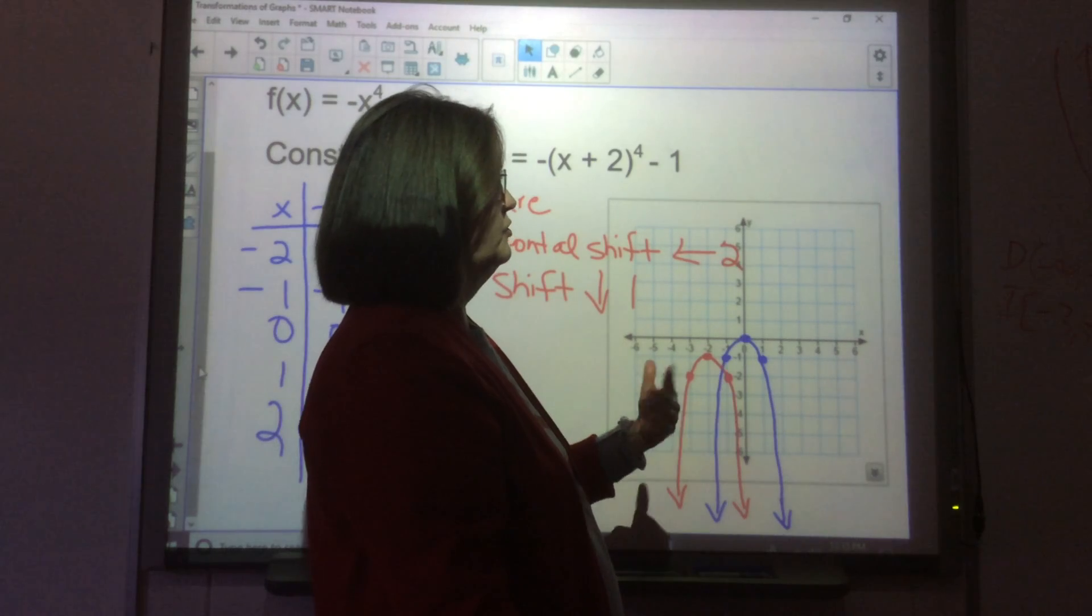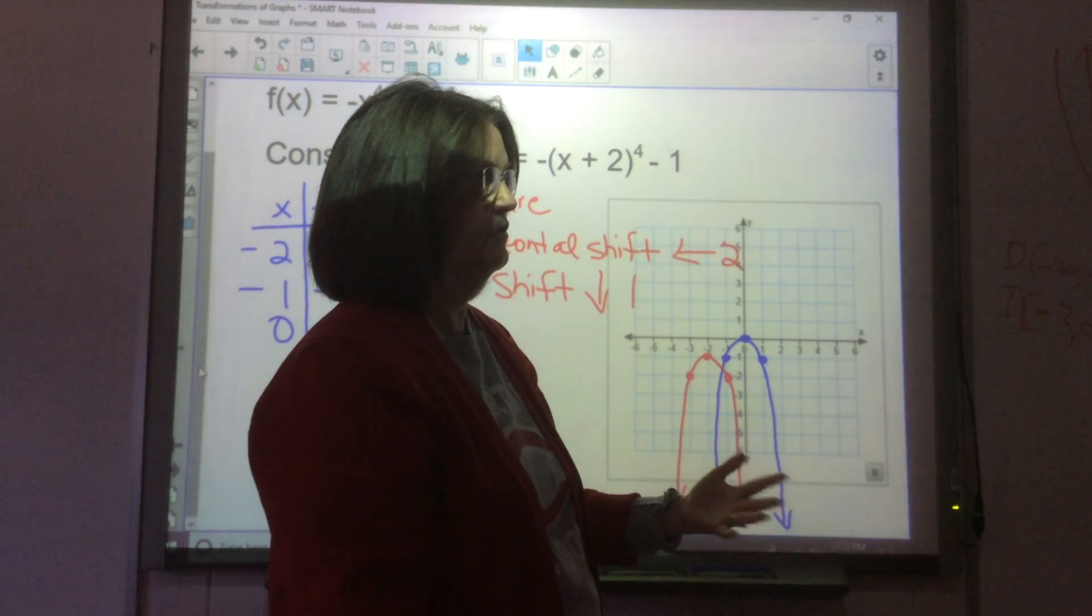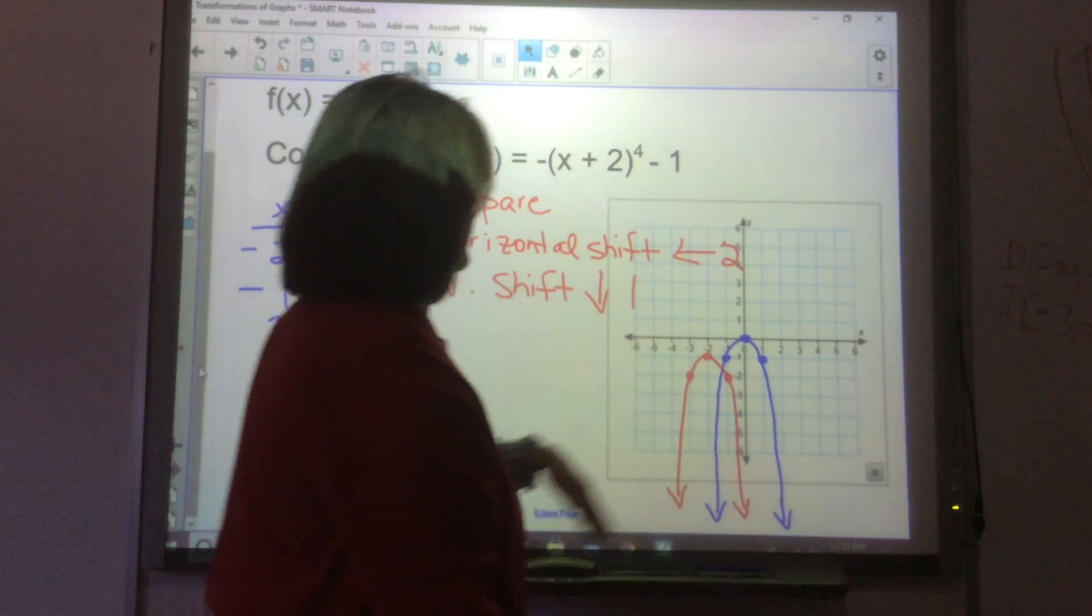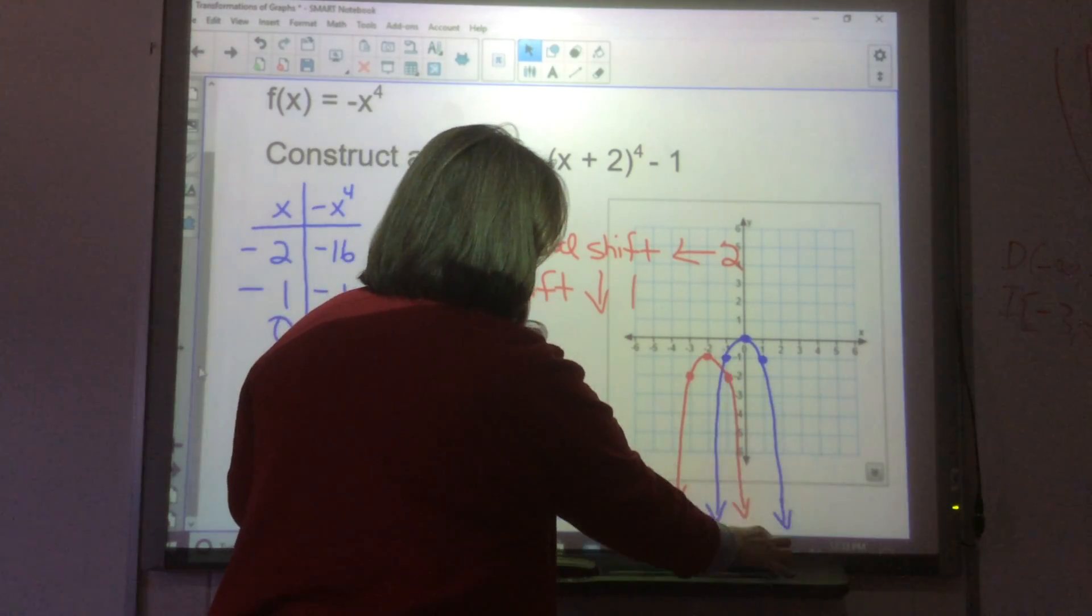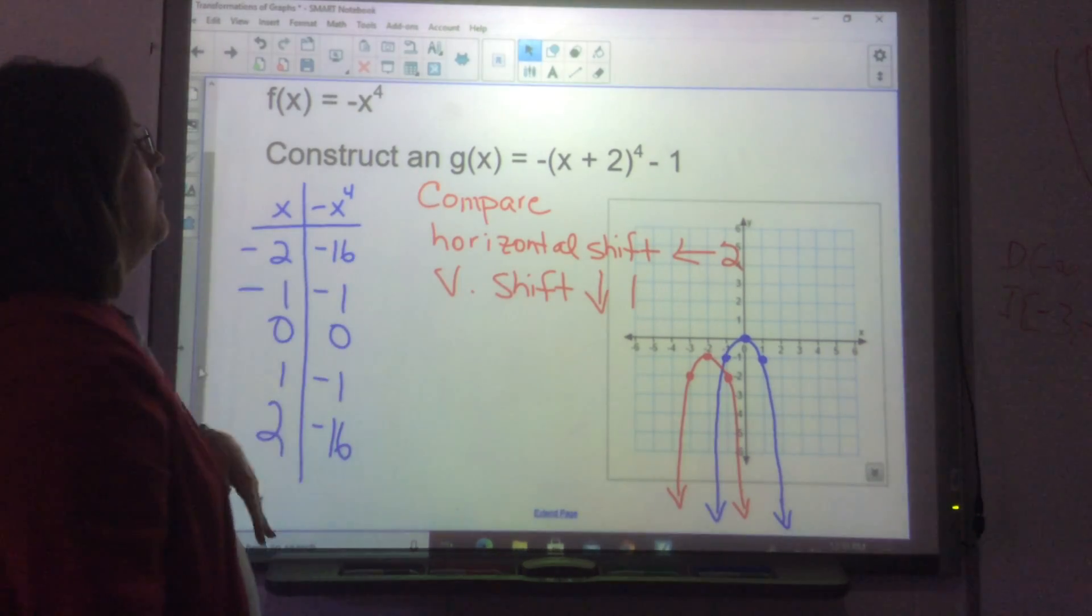Now, I could not do 2 and 16, 2 and negative 16, and negative 2 and negative 16. Could not do that. So, I just, it's a real steep graph. So, I just shaded, just sketched it that way.